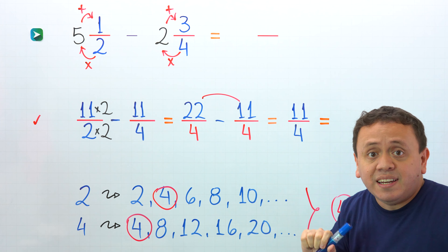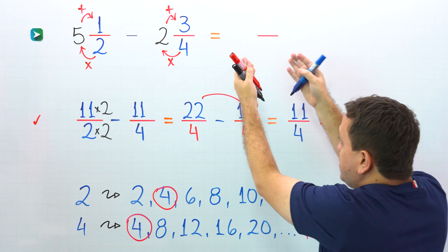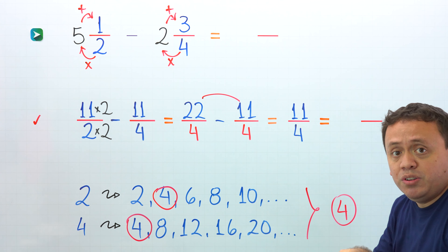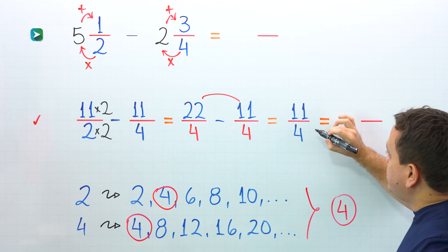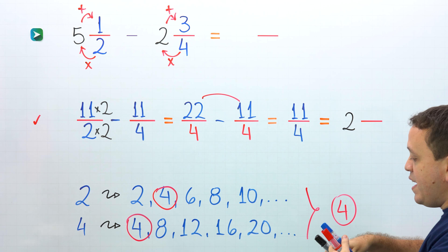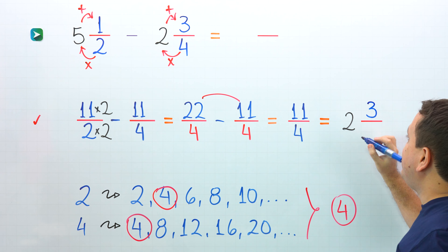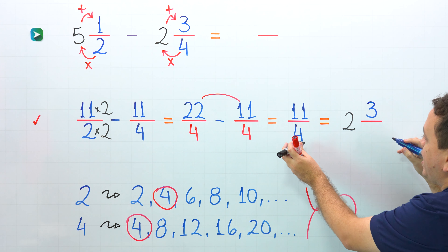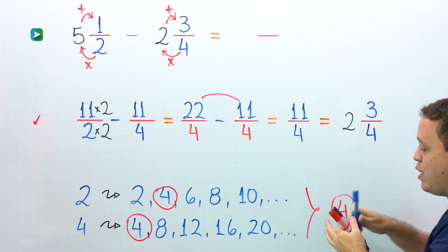However, we don't need the answer as an improper fraction. If we start with two mixed numbers, we will finish with a mixed number. So finally, we will convert this improper fraction to a mixed number. Pay attention to the following question: how many times does 4 go into 11? 4 goes into 11 two times, and then we multiply. 2 times 4 is 8. To get 11, we need to add 3. Then we keep the denominator the same: 4. The final answer is 2 and 3 fourths.